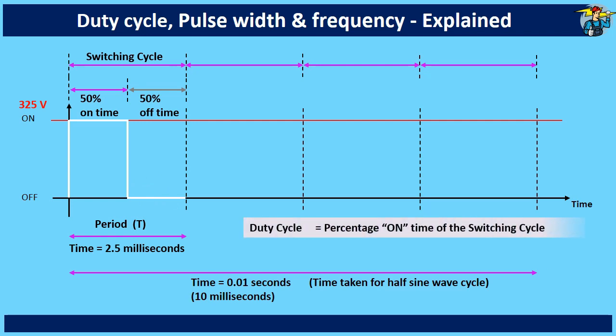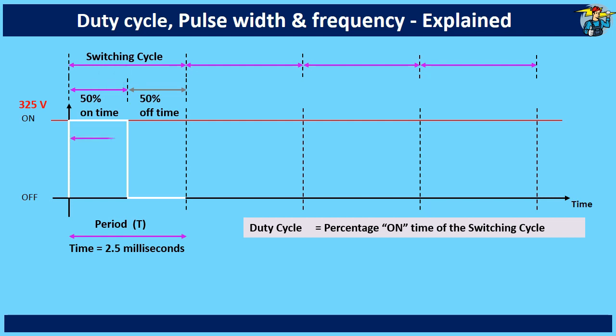Duty cycle is the percentage on time of the periodic time of the switching cycle. So here in this first switching cycle, duty cycle is 50%. Pulse width is the time duration of the duty cycle and is simply the switch on time of the switching cycle. Here the pulse width is 1.25 milliseconds.